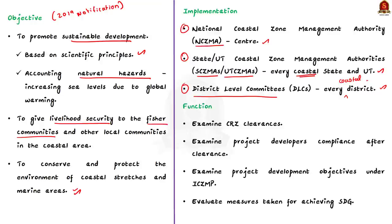These bodies examine whether coastal regulation zone clearances granted by the government are per procedure, whether project developers are complying with conditions after getting clearance, whether project development objectives under the Integrated Coastal Zone Management Program are successful, and they also evaluate steps taken by the government towards achieving targets under the Sustainable Development Goals.